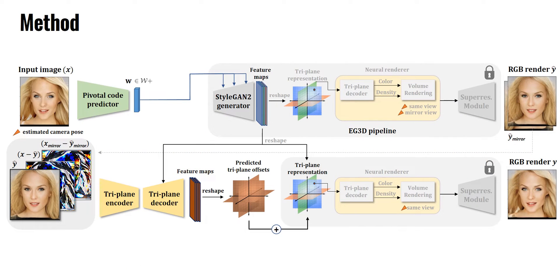Our method, TriplaneNet, tackles these shortcomings by directly utilizing the triplane representation in the EG3D pipeline. Given an input image, in an initial phase, we utilize an encoder to predict a pivotal latent code in the space of EG3D. In the second phase, we take the corresponding initial reconstruction and its difference with the input image, and process it with an auto-encoder to estimate triplane offsets. The offsets are numerically added to the triplane output by the EG3D generator, and the final reconstruction is obtained by processing the refined triplanes through the renderer block.